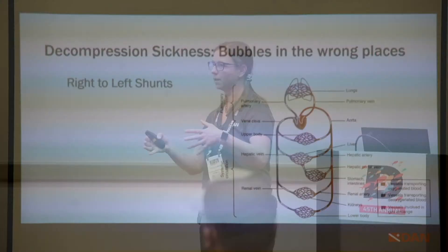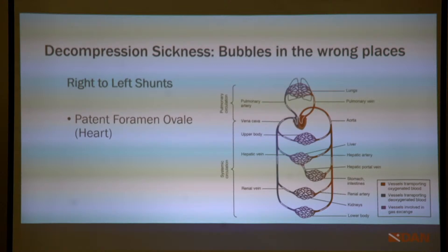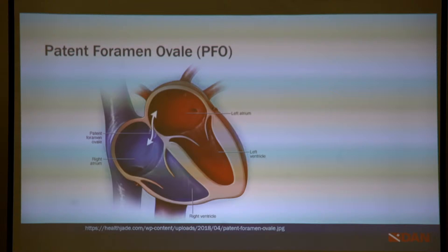Decompression sickness is basically those bubbles we just talked about, but in the wrong spot — they made it into an organ that can't function if bubbles are stuck in it and perfusion stops. This usually happens through right-to-left shunting mechanisms. There are two distinguished ones: the PFO — patent foramen ovale — which you've all heard about, and IPAVAs or lung shunts. When someone presents with DCS, the first thing to check is usually a PFO, and in many cases that is exactly what's found.